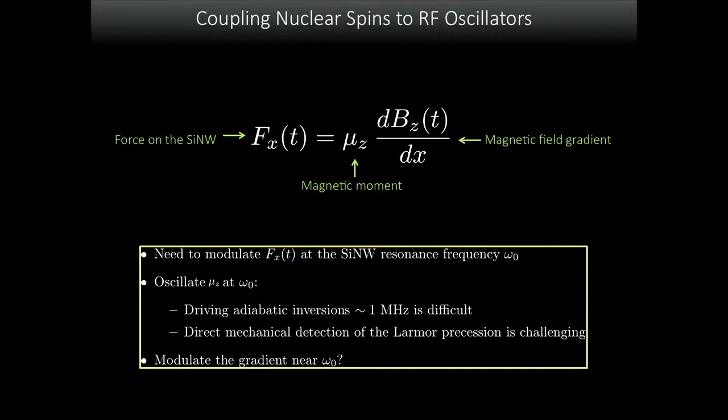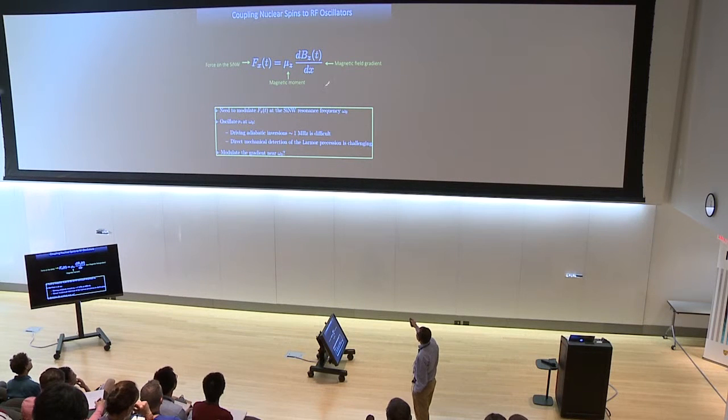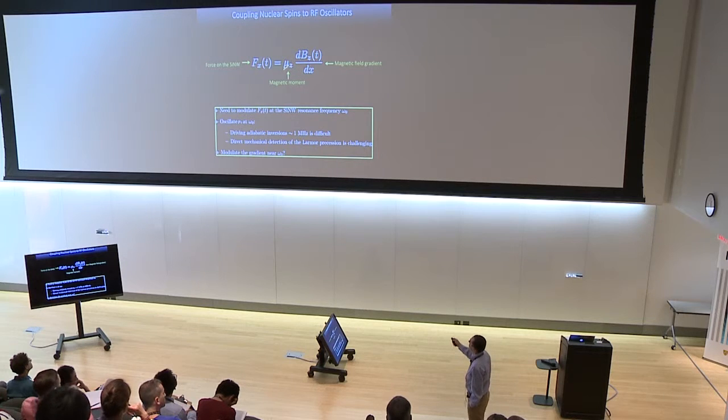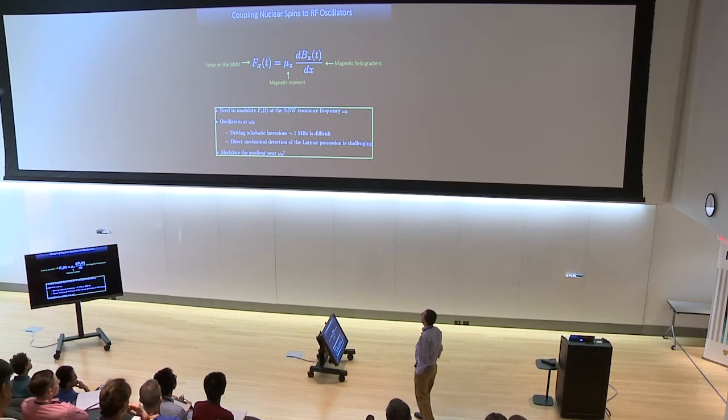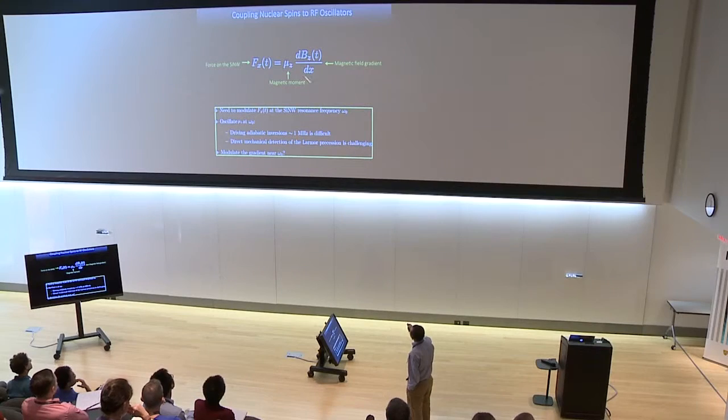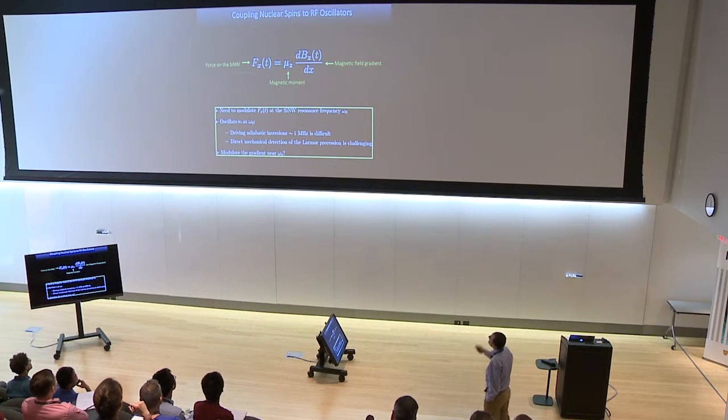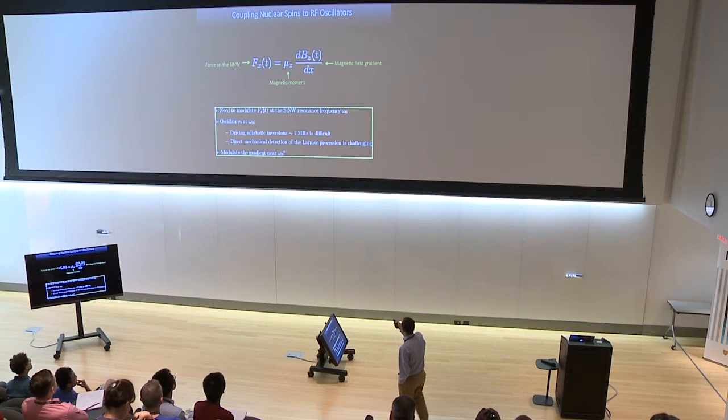That does present some challenges for spin detection. The way spin detection works is you want to generate a force from the spins that's at resonance with the cantilever, at half a megahertz in our case. In the MRFM experiments I showed you, the gradient term was static, and the z component of the magnetic moment was made time-dependent by doing adiabatic reversals at twice the cantilever frequency. This becomes very challenging at megahertz frequency, hundreds of kilohertz frequencies. What we decided to do was actually make the gradient time-dependent and apply only a weak time dependence to the magnetic moment to generate a force that was resonant.